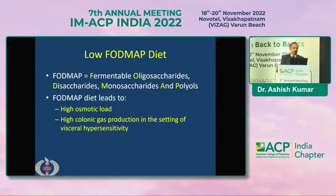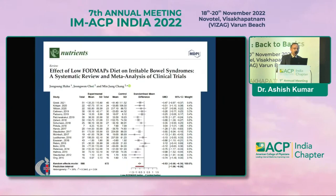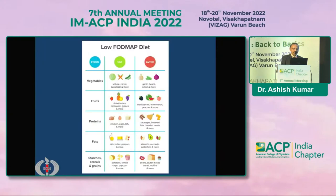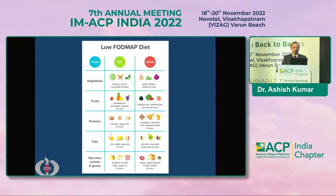What are low FODMAP diets? FODMAP stands for fermentable oligosaccharides, disaccharides, monosaccharides, and polyols. FODMAP diets lead to high osmotic load and high colonic gas production in the setting of visceral hypersensitivity. Multiple studies and meta-analyses have shown that a low FODMAP diet makes patients feel better — less gas is produced, so there is less bloating and less abdominal discomfort, especially in those with high visceral hypersensitivity. Physicians must have a low FODMAP diet chart — for example, garlic and onions are high FODMAP and should be avoided, while lettuce and carrot are low FODMAP. Similarly, fruits, proteins, and fats can be divided into low and high FODMAP, and patients can be advised accordingly.